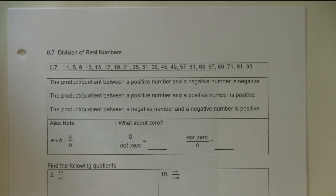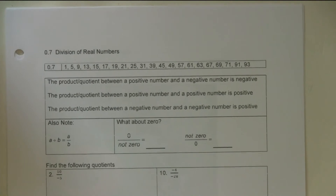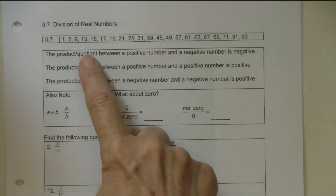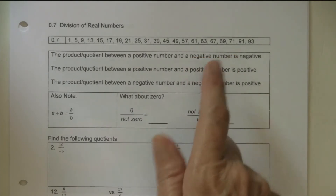Welcome friends again. Now we're doing chapter 0.7. This one is about quotients — the division between a positive and a negative number.